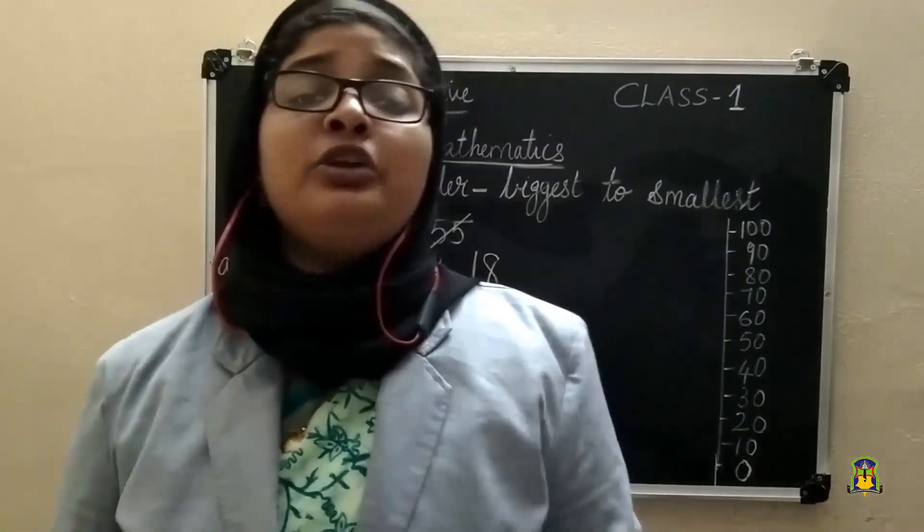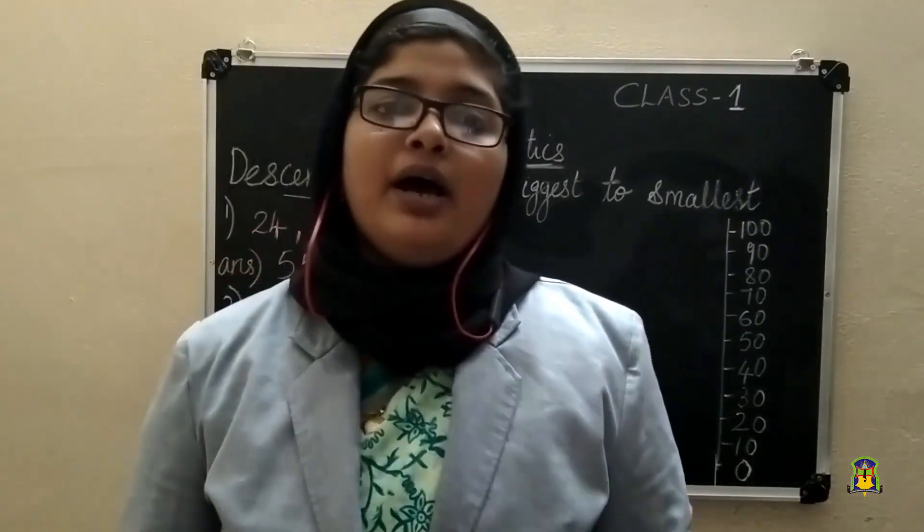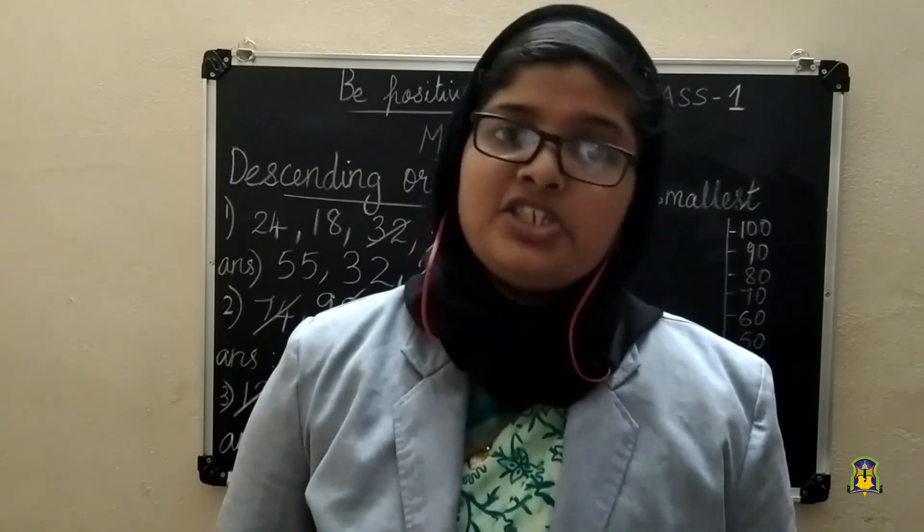Today we discussed ascending order and descending order. Ascending order means numbers ranging from smallest to biggest. Descending order means numbers ranging from biggest to smallest. Hope you all understood the topic. We will see you in the next class. Thank you all.